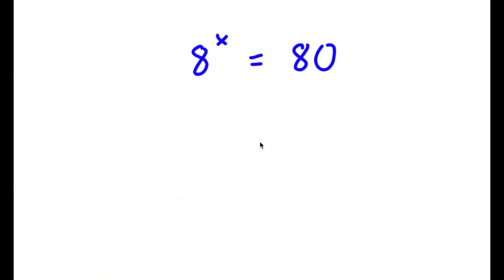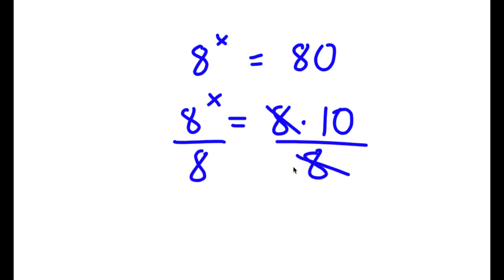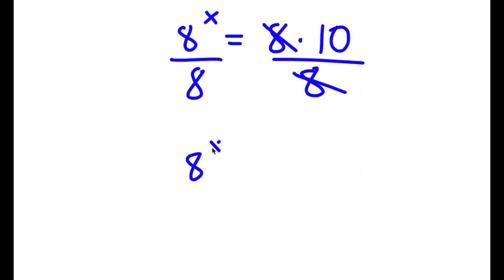In this problem, I have 8 to the power of x is equal to 80. I'm going to start by rewriting 80 as 8 times 10. So I have 8 to the power of x is equal to 8 times 10. Dividing both sides by 8, the 8s cancel, and I get 8 to the power of x over 8 is equal to 10.